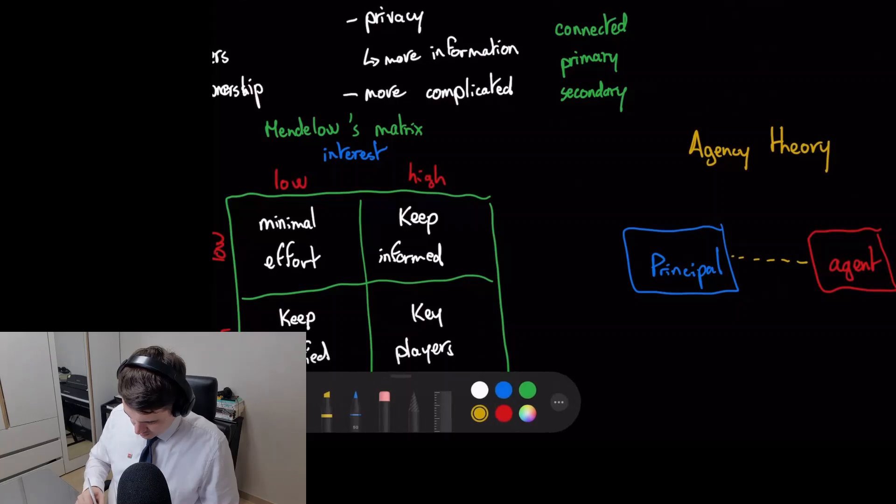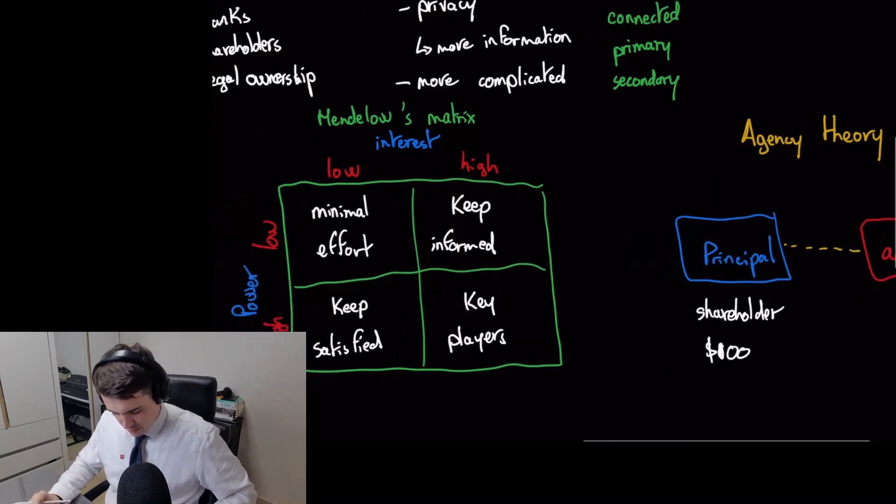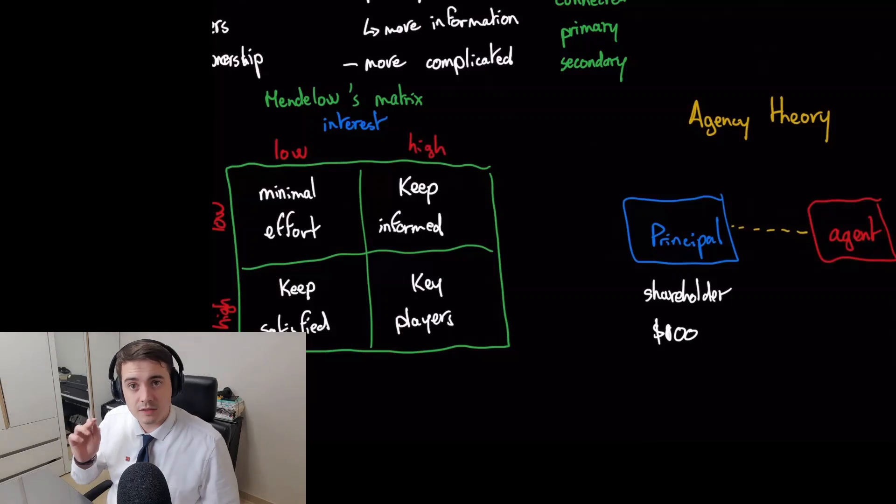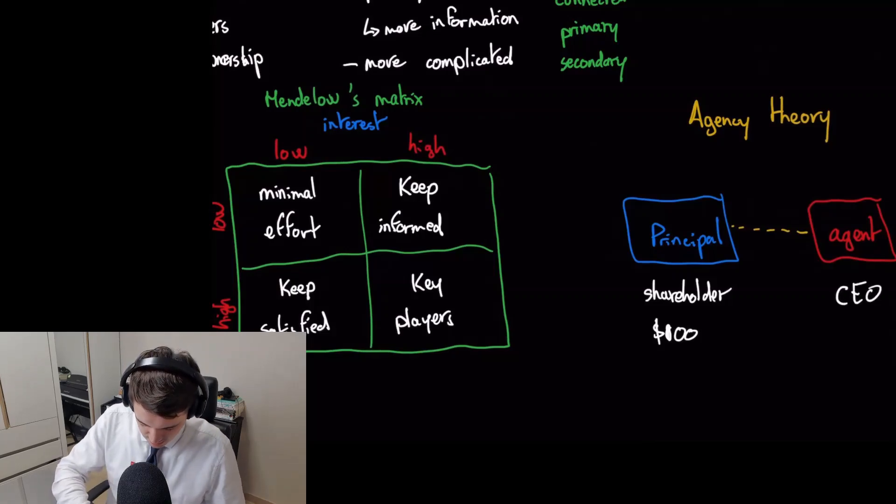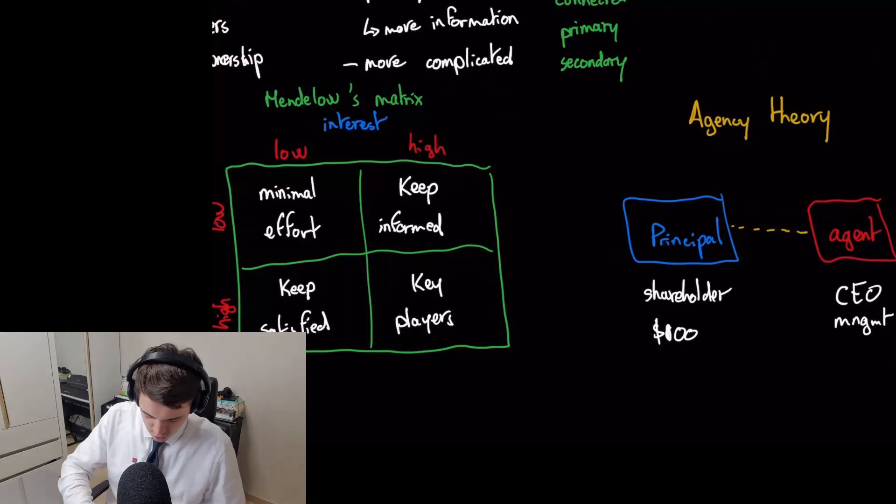So the principal is the shareholder. He invested $100. So if you bought stocks of Tesla, you are the principal. You bought a very small amount, but still you have one or two shares of Tesla, so you are a shareholder, you're the principal. The agent is the CEO or management. They are working for you to protect your principal—they are the steward.